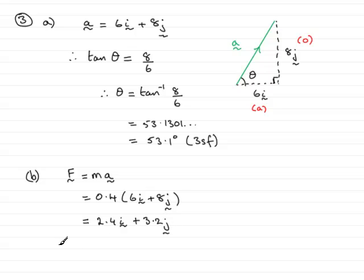Now to work out the magnitude of any vector, in this case F, what you're going to need to do is do the sum of the squares of the i and j components and then square root them. So that would be the square root of 2.4 squared plus 3.2 squared. And that comes to 16. So it's the square root of 16, and that's going to be 4. 4 newtons is the magnitude of the force F.